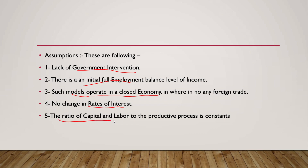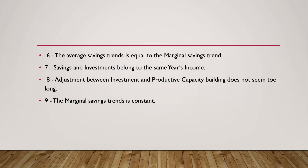Fourth, the ratio of capital and labour in the productive process is constant. Fifth, the average savings propensity is equal to the marginal savings propensity.